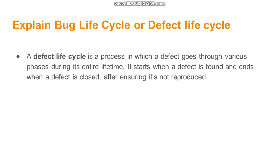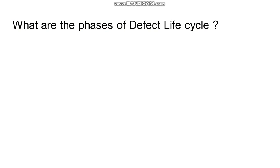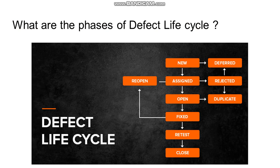The defect life cycle refers to the various stages a defect goes through during its entire lifetime — it starts when the defect is found and ends when it is closed. The phases are: New (when opened), Assigned (when assigned to a developer), Open (when the developer is working on it), Fixed (when resolved), then it comes back to the tester for Retest, and finally Closed. If still not resolved after fixing, it is Reopened. If a defect was already raised by someone else, it is marked as Duplicate. If the developer rejects it, it is Rejected. If it cannot be resolved in the current iteration, it is Deferred to the next iteration.